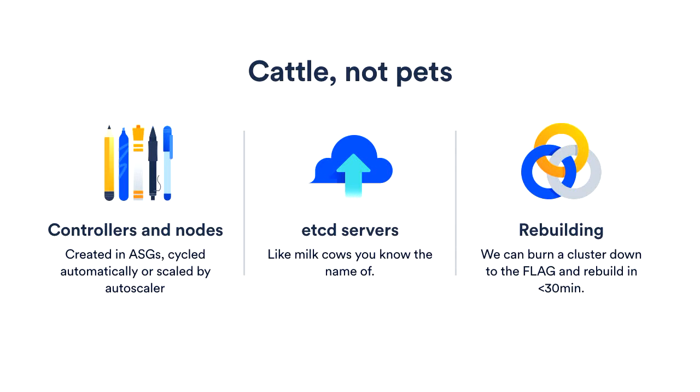However, the etcd servers are the tricky part of a Kubernetes cluster. You get all this great win of having all these stateless nodes running, but the way you get that is by pushing all the state off to the etcd servers. So you have the classic database problem, except even more so because now it's a distributed database running a consensus protocol, which everyone knows is awesome fun times to run. You basically can do almost nothing automatically to those things without being ridiculously careful and having hundreds of safeguards around everything. I like to think of the etcd servers as milk cows you know the names of — they're kind of cattle, but a little bit petty; if one gets sick, you're going to try and help it out a bit.